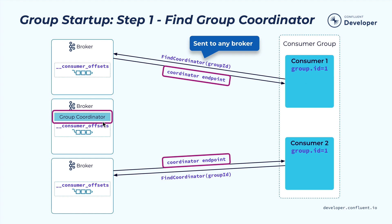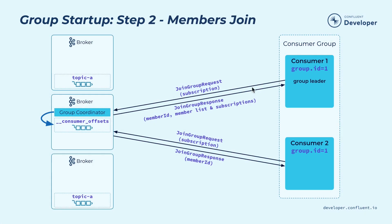This internal topic will be used multiple times to manage various other things. Once the broker identifies the group coordinator for this consumer group, it will send its endpoint, including the host and port, back in the response. The next thing the consumer instances need to do is to send a join group request to this group coordinator. In the join group request, it will include the subscription it has.